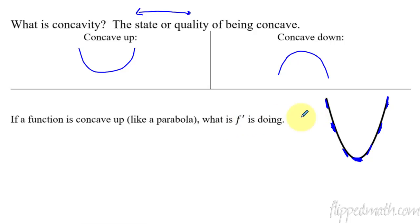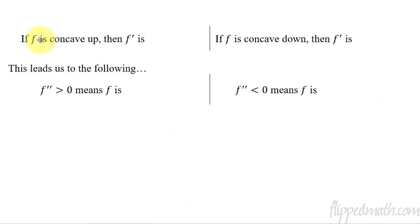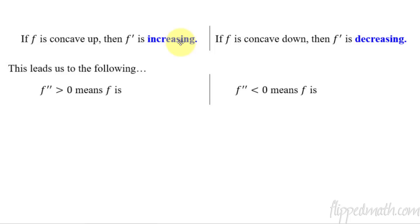So what is f prime doing along this? It's going from negative and starting to increase, gets to zero, then it continues increasing and goes positive. So that leads us to say that if f is concave up, then f prime is increasing. And if f is concave down, then f prime is decreasing. The slope is getting bigger — that's what's happening if something is concave up.